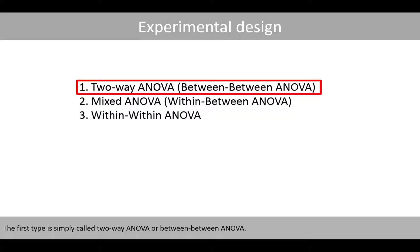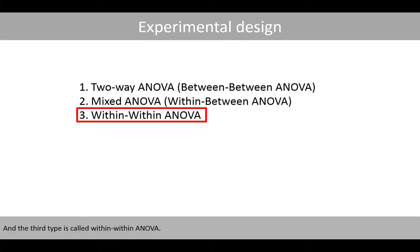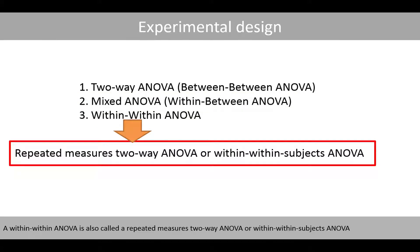The first type is simply called a two-way ANOVA or between-between ANOVA. The second type is called mixed ANOVA or within-between ANOVA. And the third type is called within-within ANOVA, which is also called a repeated measures two-way ANOVA or within-subjects ANOVA.